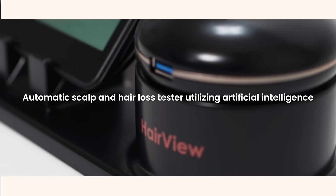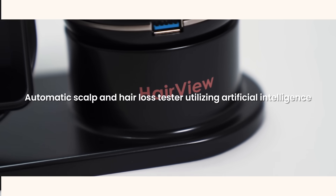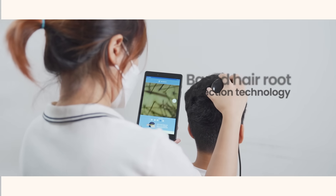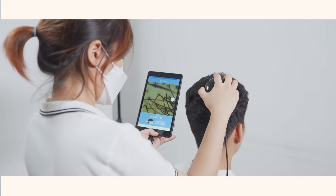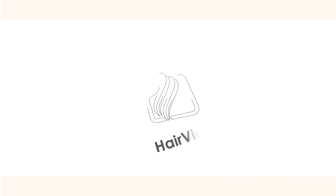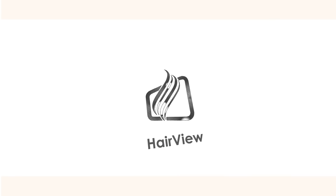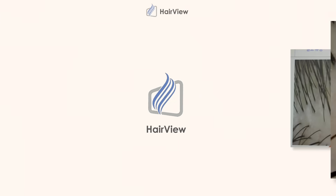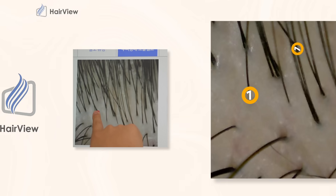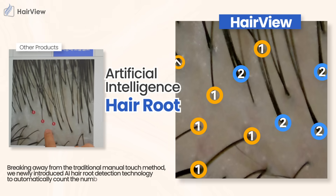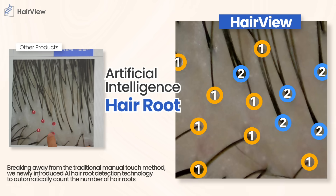HairView — Automatic Scalp and Hair Loss Tester Utilizing Artificial Intelligence Based Hair Root Detection Technology. Breaking away from the traditional manual touch method, we newly introduced AI Hair Root Detection Technology to automatically count the number of hair roots.